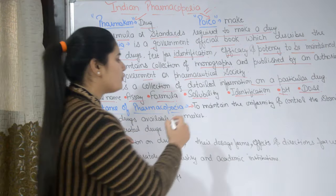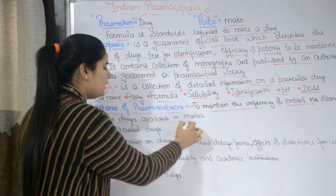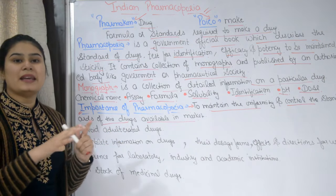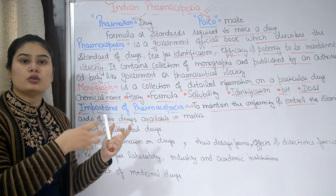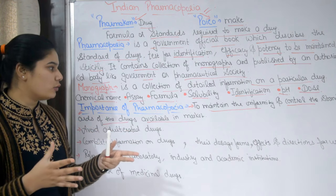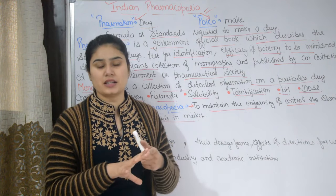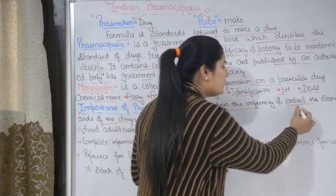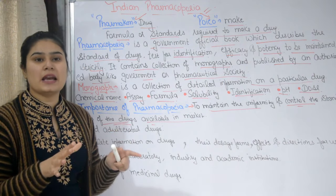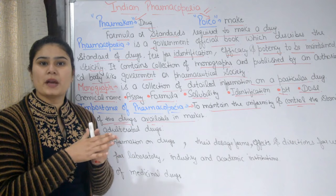The first importance is to maintain uniformity and control the standards of drugs available in the market. Uniformity means that, for example, the chemical formula of all Paracetamol will be the same — no Paracetamol will be different. This maintains uniformity so that no one can adulterate any drug or do any mixing, and the standards of all drugs available in the market are controlled.